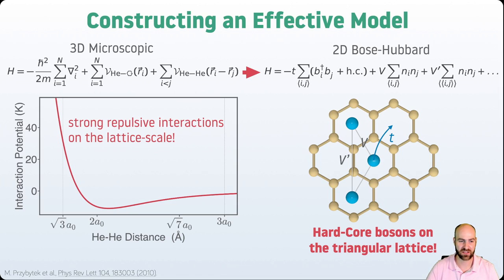For example, at the nearest neighbor distance of the triangular lattice, we have a strong repulsive potential. What that means is the model we're going to try to map onto is an effective 2D Bose-Hubbard model, but that model has an interesting character. It corresponds to the triangular lattice and has hopping nearest neighbor and next nearest neighbor interactions, as shown here.